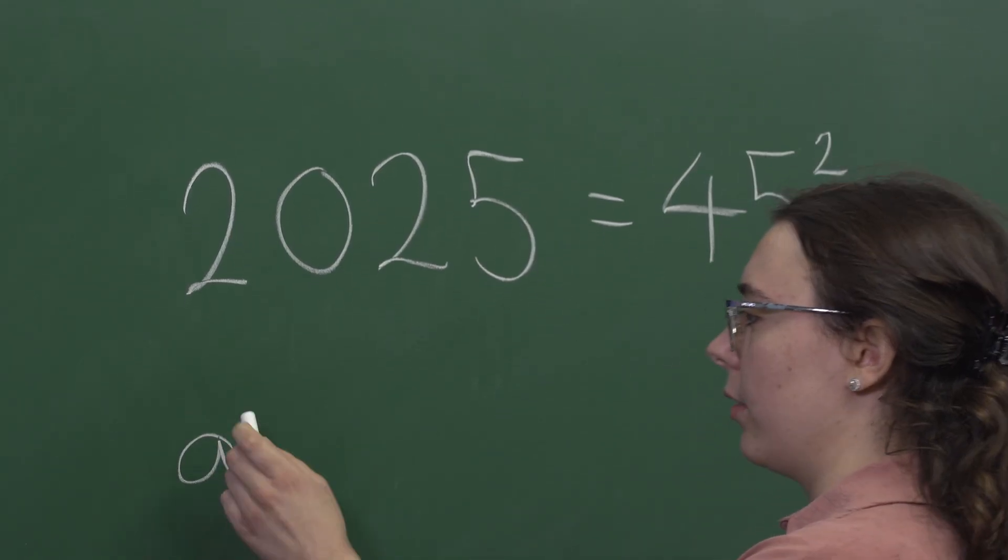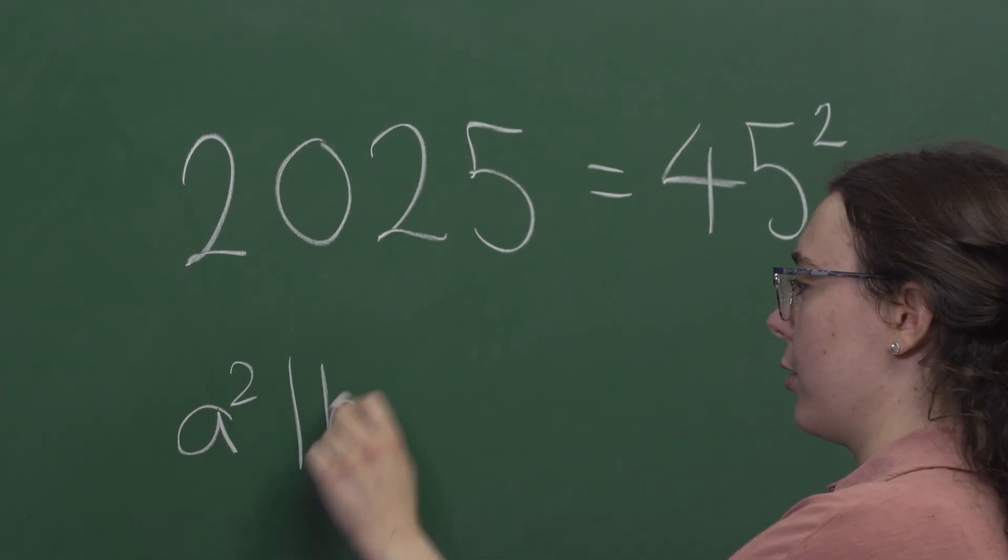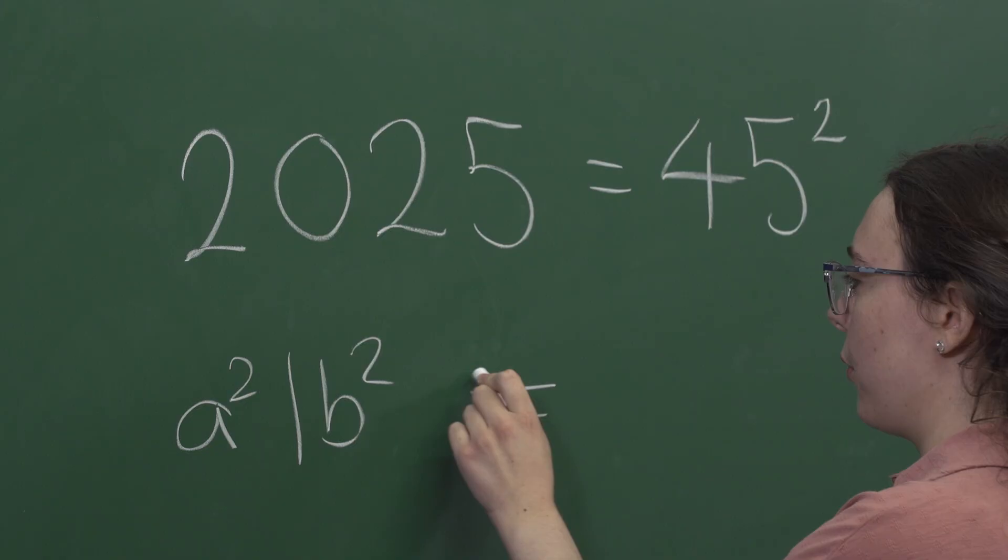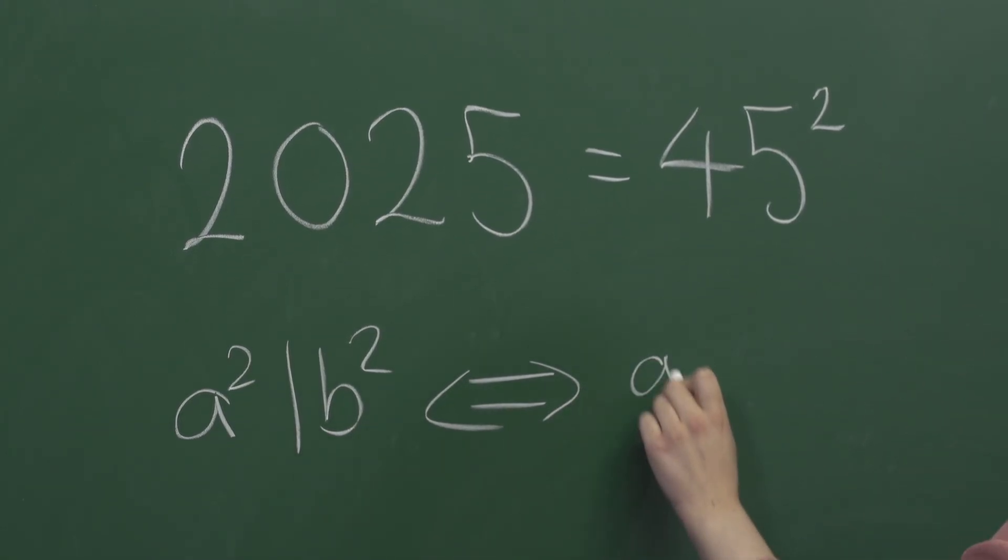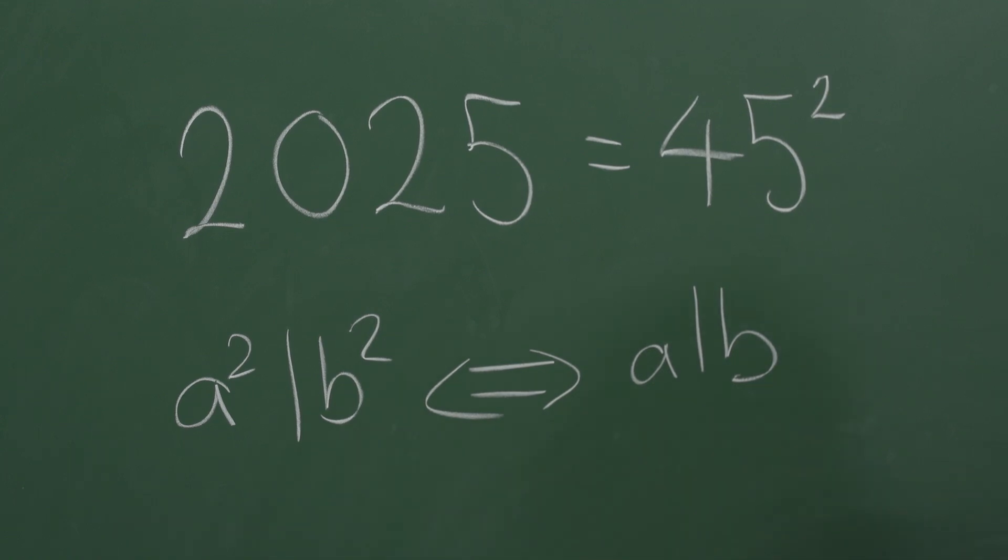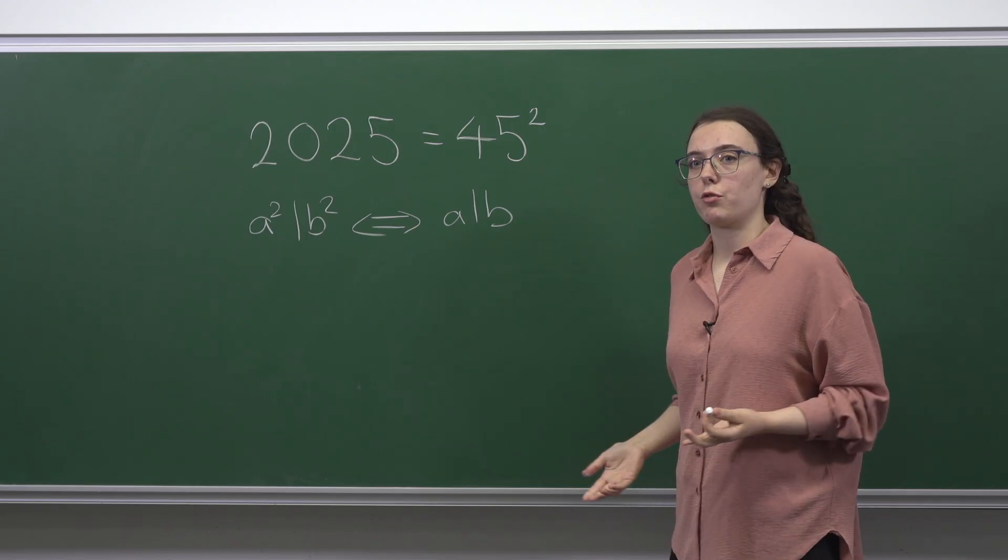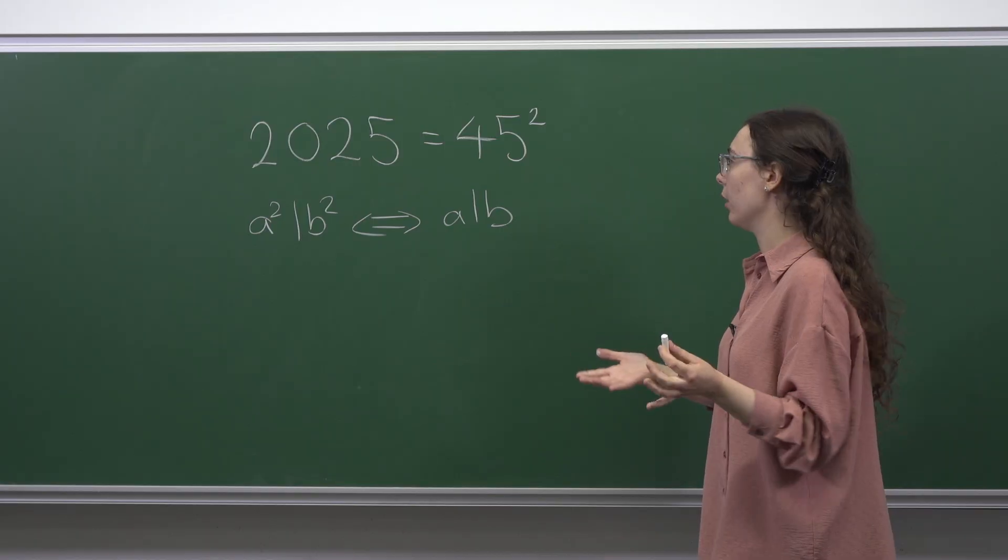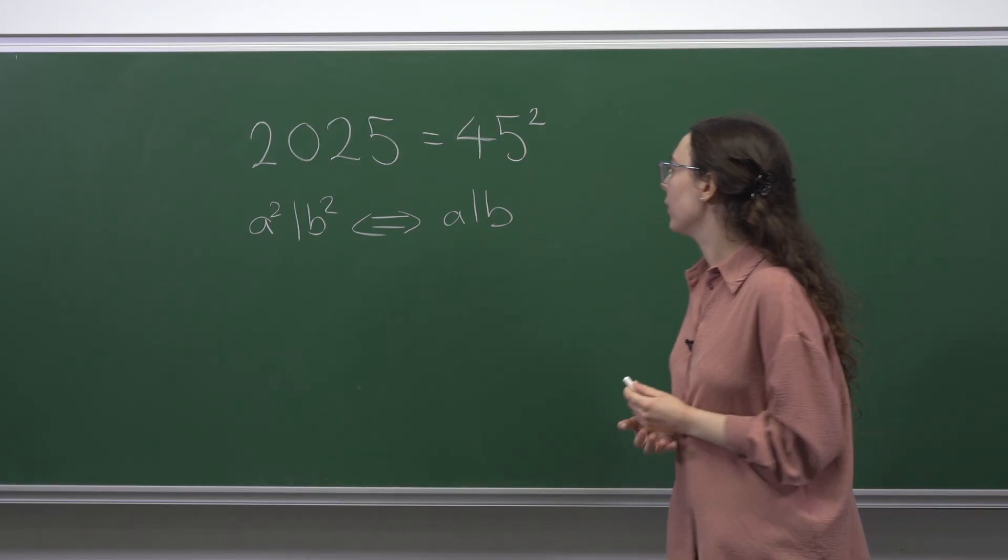So we have this fact that a squared divides b squared if and only if a divides b, where this line means divides or is a multiple of. And you can think about why that's true in terms of the number of prime factors that a number has and how it splits into these prime factors.